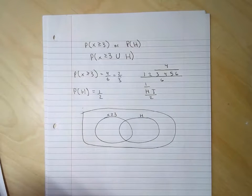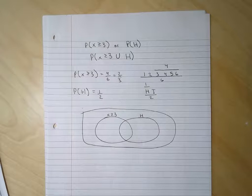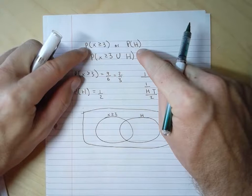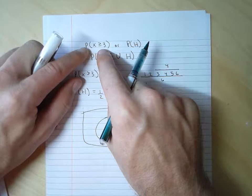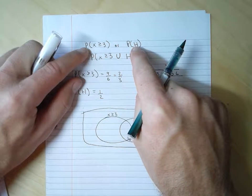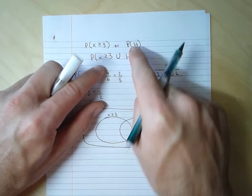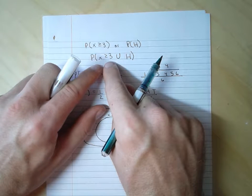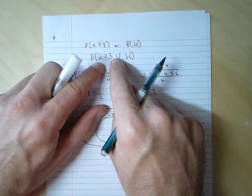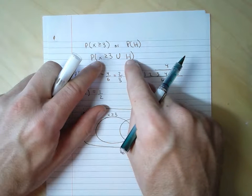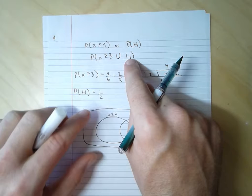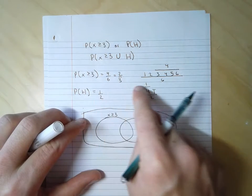I'm going to help you answer this question about Colleen and her cube rolling and coin flipping. We need to identify when the number cube is rolled for three or greater, or when the coin is flipped to heads. In probability notation, this is the union of the number cube being rolled to three or greater with the coin flip landing on heads.